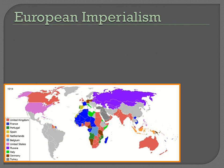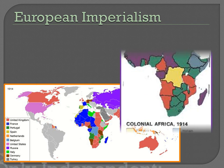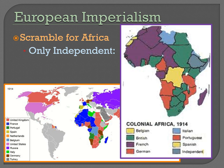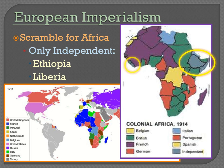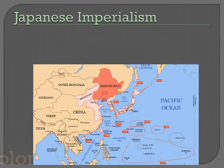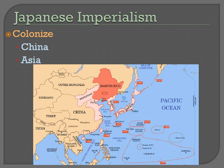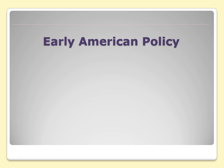The United States isn't the only country in the world that's imperialist. Last year in world history, you probably learned about the scramble for Africa. By 1914, very few places in Africa are actually independent — only Ethiopia and Liberia. Europe has pretty much taken over most of Africa. Japan is imperializing too — they've taken over parts of China and other parts of Asia as well. So America, being a nation on the rise, we want to imperialize too, though we'll take a slightly different approach than the Japanese or Europeans.